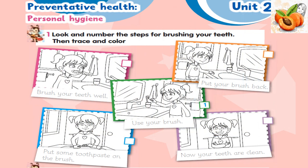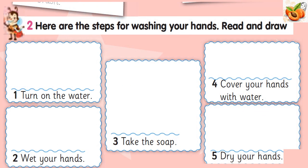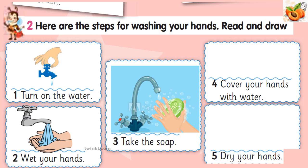Preventative health, personal hygiene. 1. Look and number the steps for brushing your teeth, then trace the color. 1. Use your brush. 2. Put some toothpaste on the brush. 3. Brush your teeth well. 4. Put your brush back. 5. Now your teeth are clean. 2. Here are the steps for washing your hands. Read and follow. 1. Turn on the water. 2. Wet your hands. 3. Take the soap. 4. Cover your hands with soap. 5. Dry your hands.